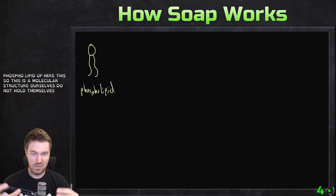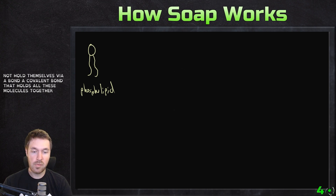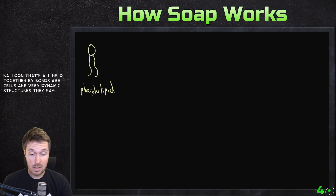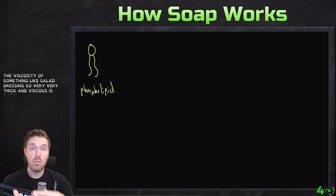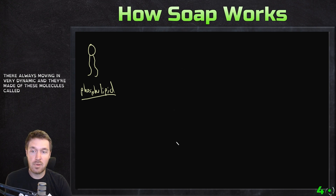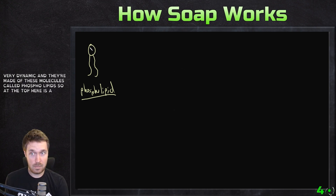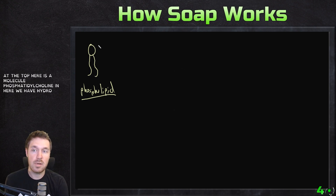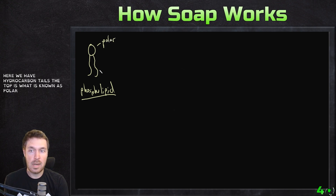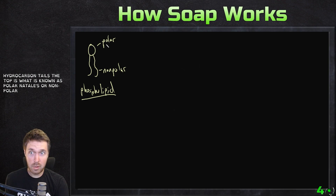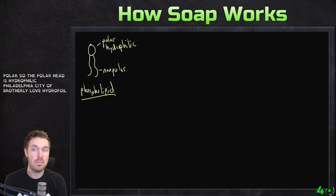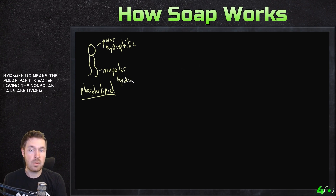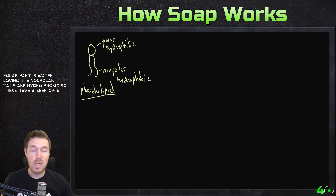So this is a molecular structure. Our cells do not hold themselves via a covalent bond that holds all these molecules together. Don't think of the cells as like the lining on a balloon that's all held together by bonds. Our cells are very dynamic structures — our cell membranes have the viscosity of something like salad dressing, very thick and viscous, always moving. And they're made of these molecules called phospholipids. At the top is a molecule called phosphatidylcholine, and here we have hydrocarbon tails. The top is what is known as polar, and the tails are nonpolar. So the polar head is hydrophilic — hydrophilic means the polar part is water-loving. The nonpolar tails are hydrophobic, so these have a fear or a phobia of water.